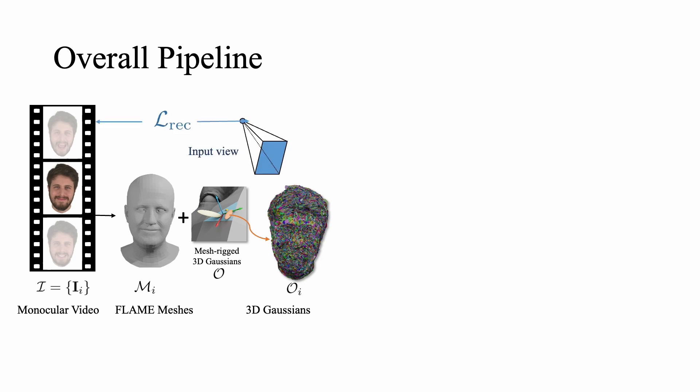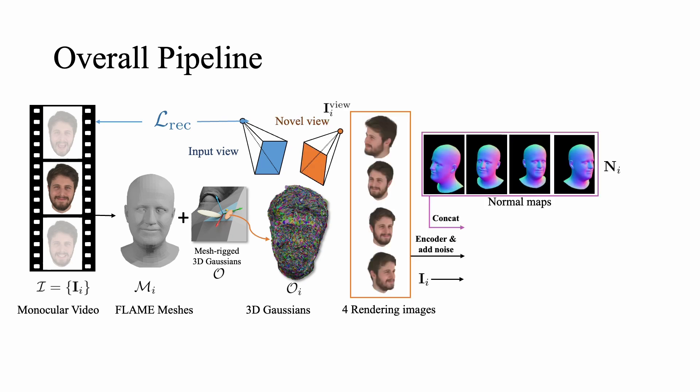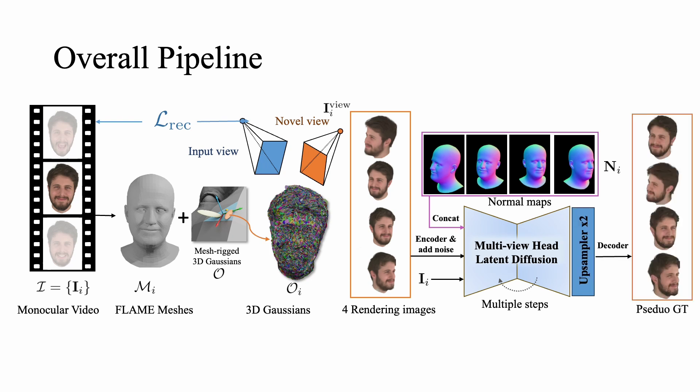At each time step, an image is rendered from the input view to compute the RGB reconstruction loss. To regularize novel views, we randomly sample 4 viewpoints and render corresponding novel view images. These images are processed by the multi-view head diffusion model, which uses normal maps as guidance to perform iterative latent denoising, producing realistic images that serve as pseudo-ground truths for the novel view renderings. Finally, a latent upsampler module enhances facial details before decoding the denoised latent into an RGB image.